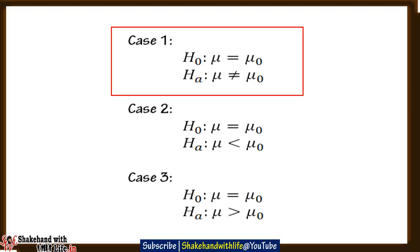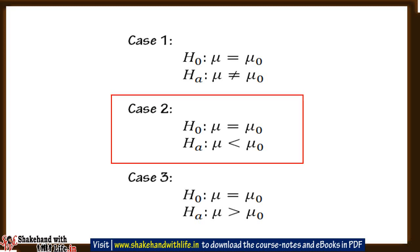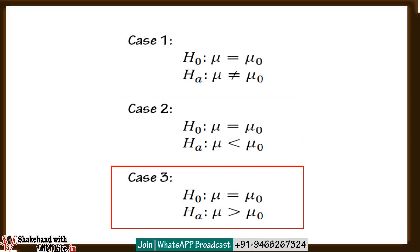The link of the two tail test for hypothesis testing is given in the eye mark above and in the description below. In the two tail test video we have already seen that for testing a hypothesis we have three different situations. Case one: when null hypothesis H naught is stated as mu equal to mu naught, and alternative hypothesis H-a is stated as mu not equal to mu naught.